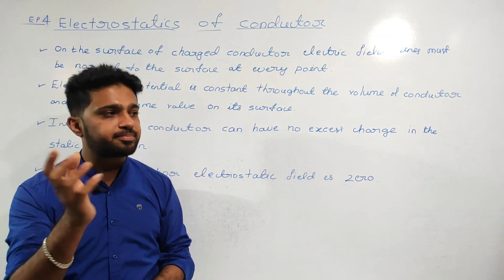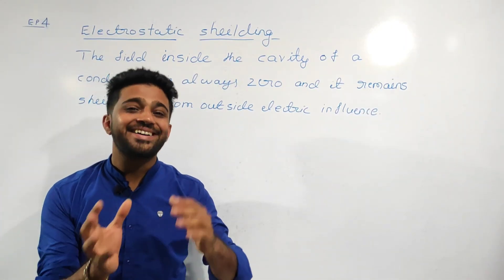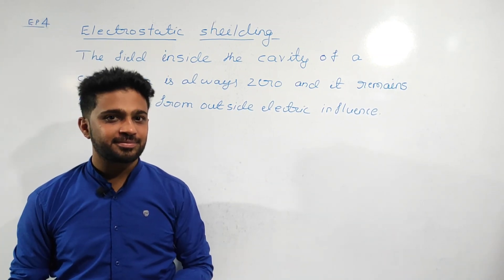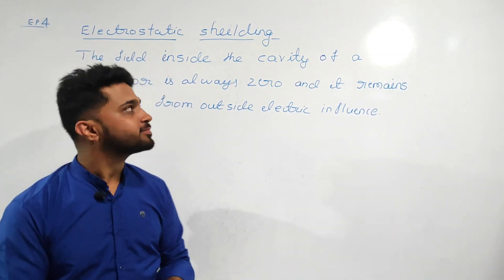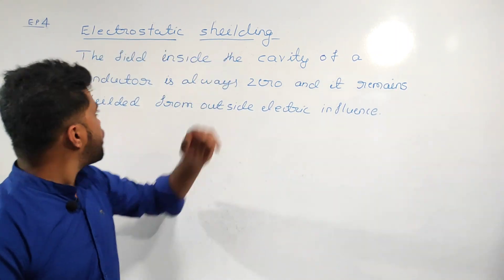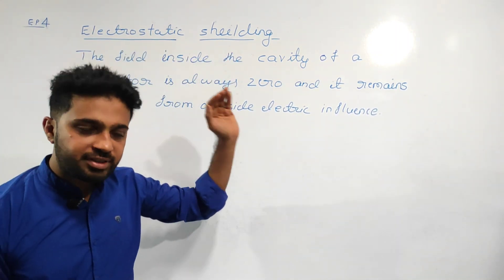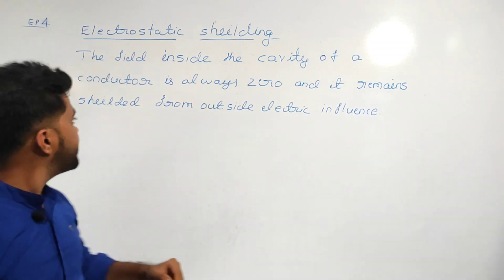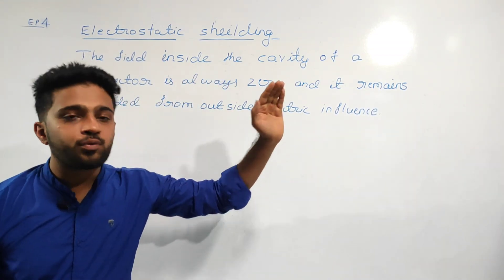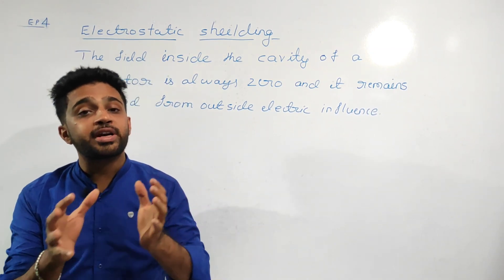Electrostatic shielding: the field inside the cavity of a conductor is always zero, and it remains shielded from outside electric influence. Shielded means protected.